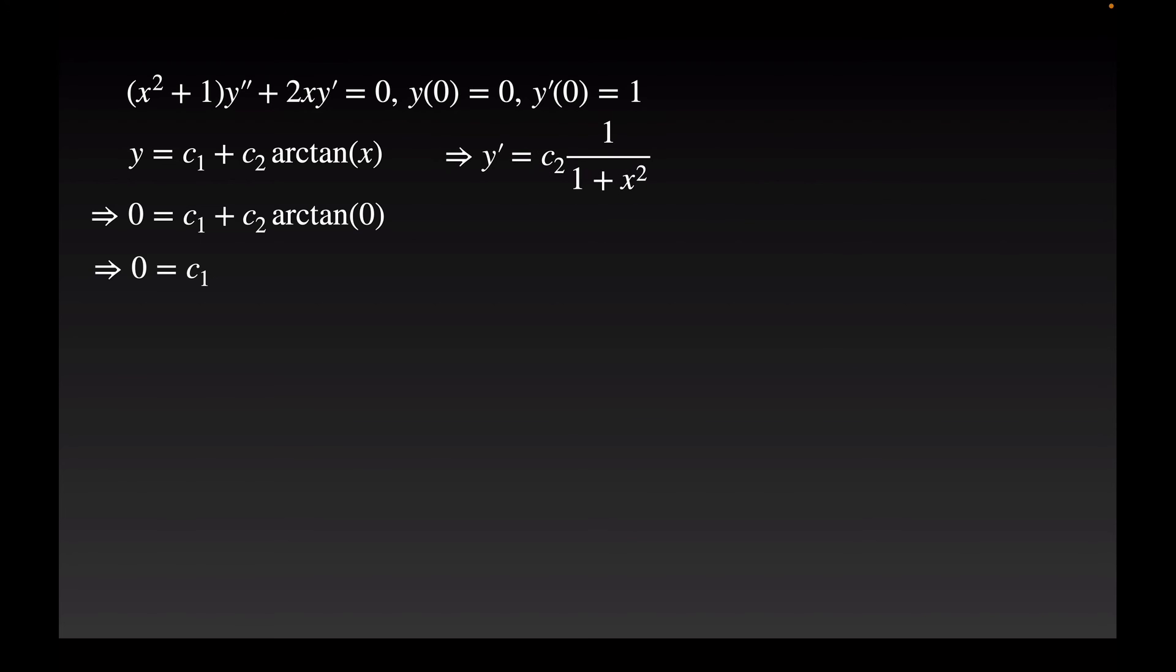I can differentiate y to get y prime is c2 times 1 over 1 plus x squared. I can use my initial condition to get c2 is equal to 1, so then the specific solution is just y equals arc tan of x. And that's how we solve this differential equation without power series.